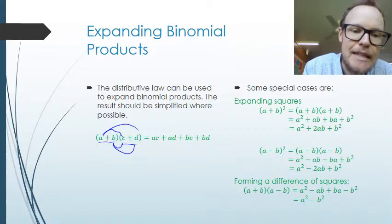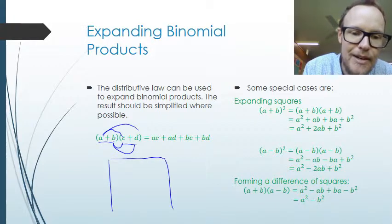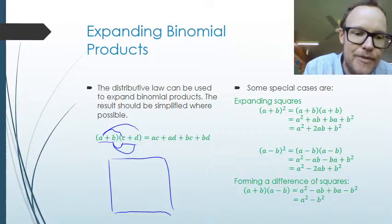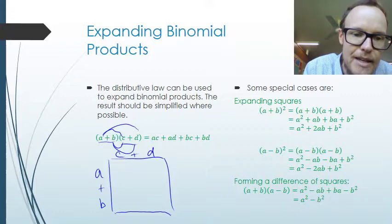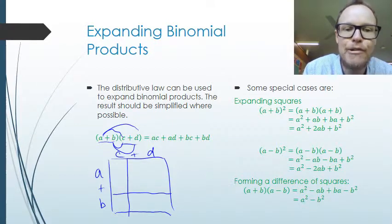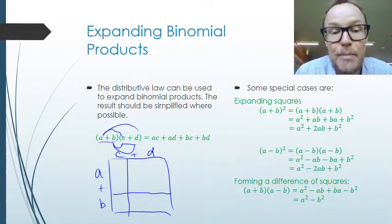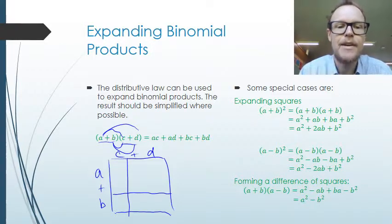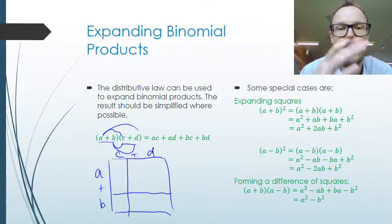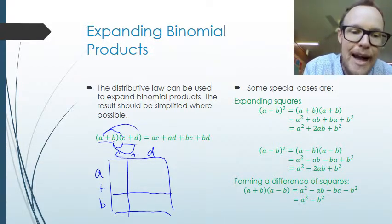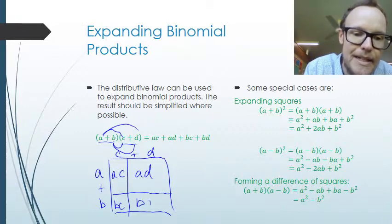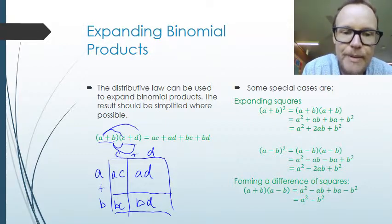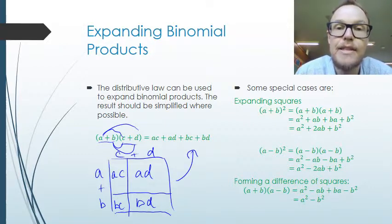The reason for that is because if we look at an array where the sides are A plus B and C plus D, the area is A plus B times C plus D. We can look at the individual smaller areas that make up the overall area: A times C is AC, we have AD, BC, and BD, and then we add them all together to get that sum.